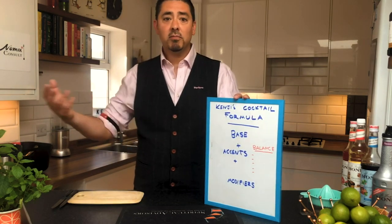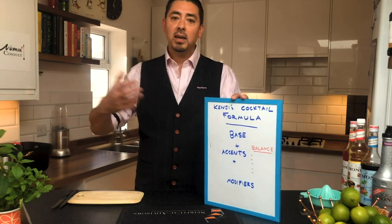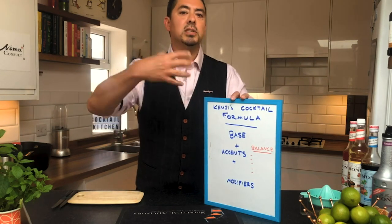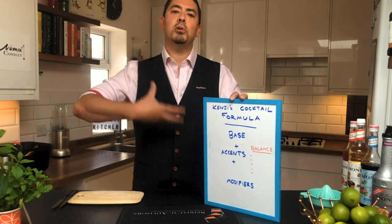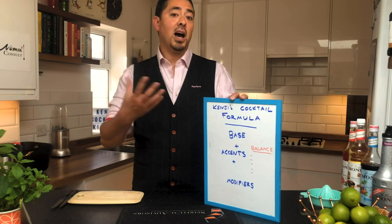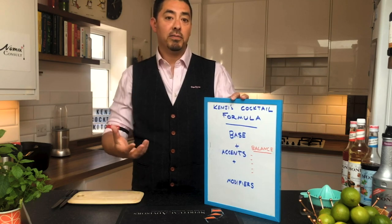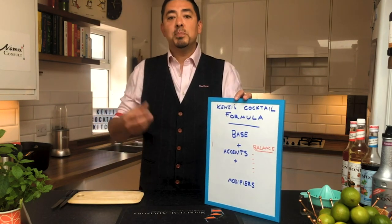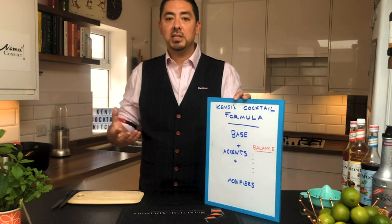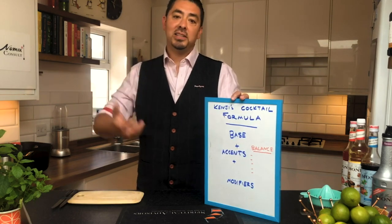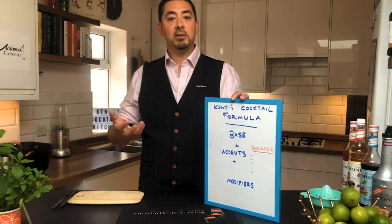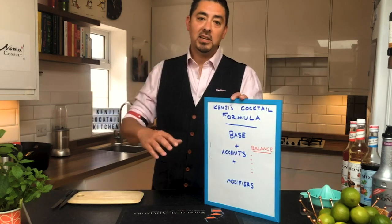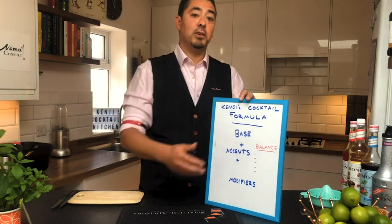Vodka, gin, rum, tequila — those are your key base spirits and those are the bits you want to explore, using the other ingredients to highlight the flavor of. The difference between vodka and gin is the botanicals in the gin. So you want a drink that highlights the flavors of the botanicals of the gin. If you covered up the flavors of the gin, you might as well have used the vodka.